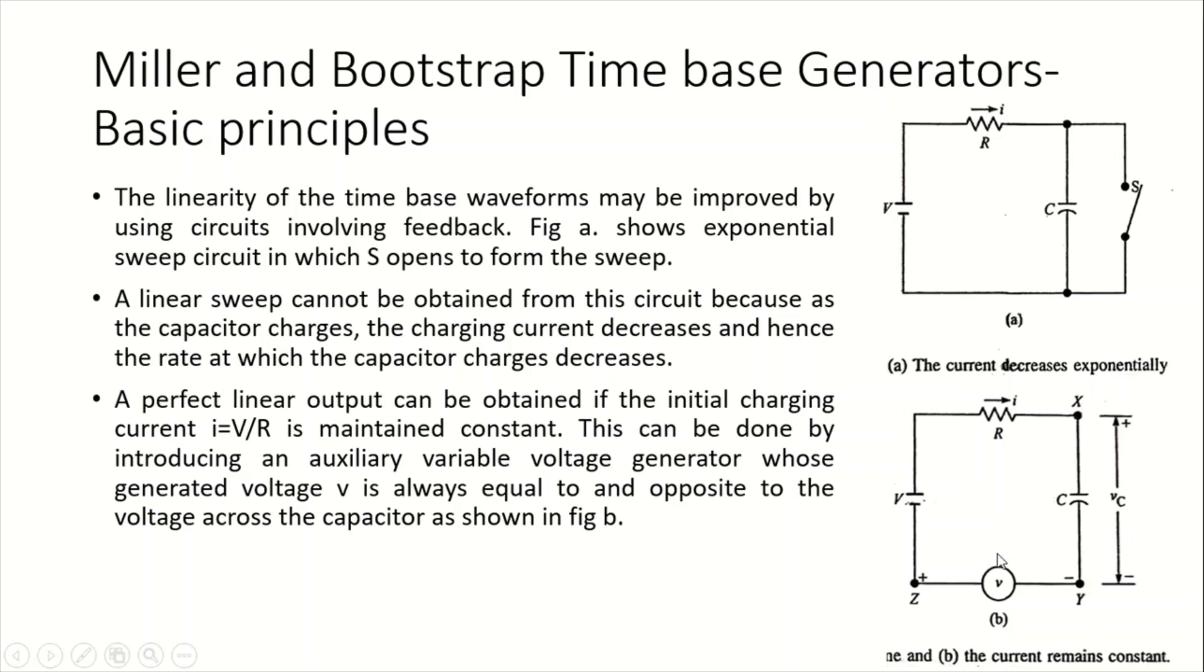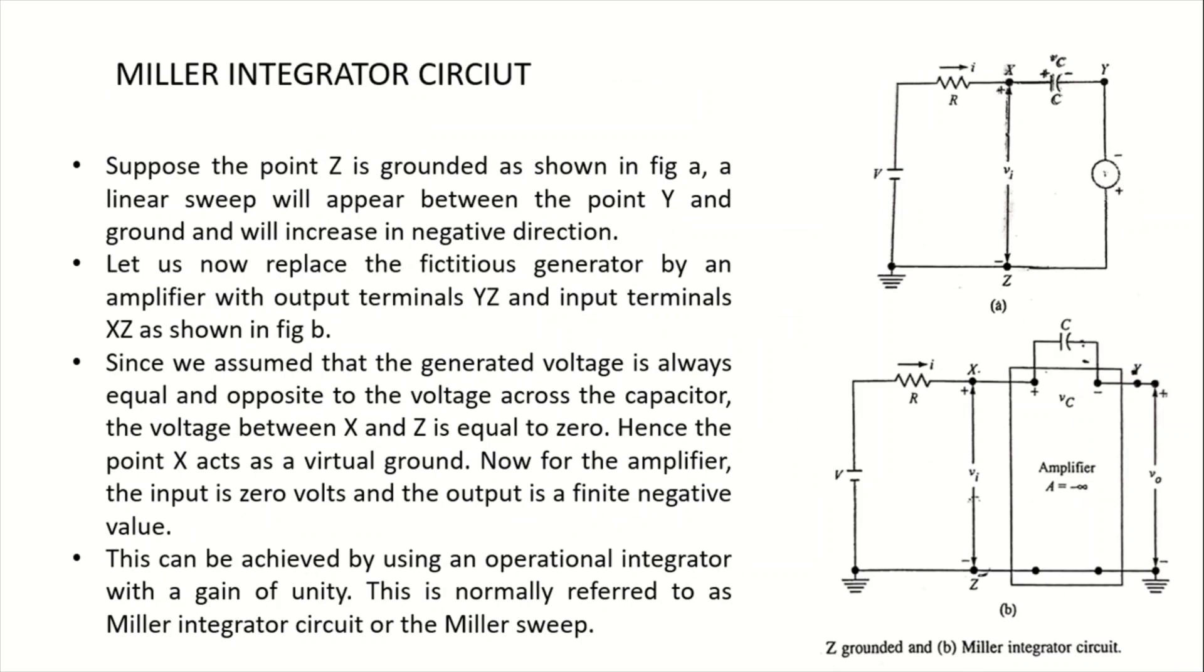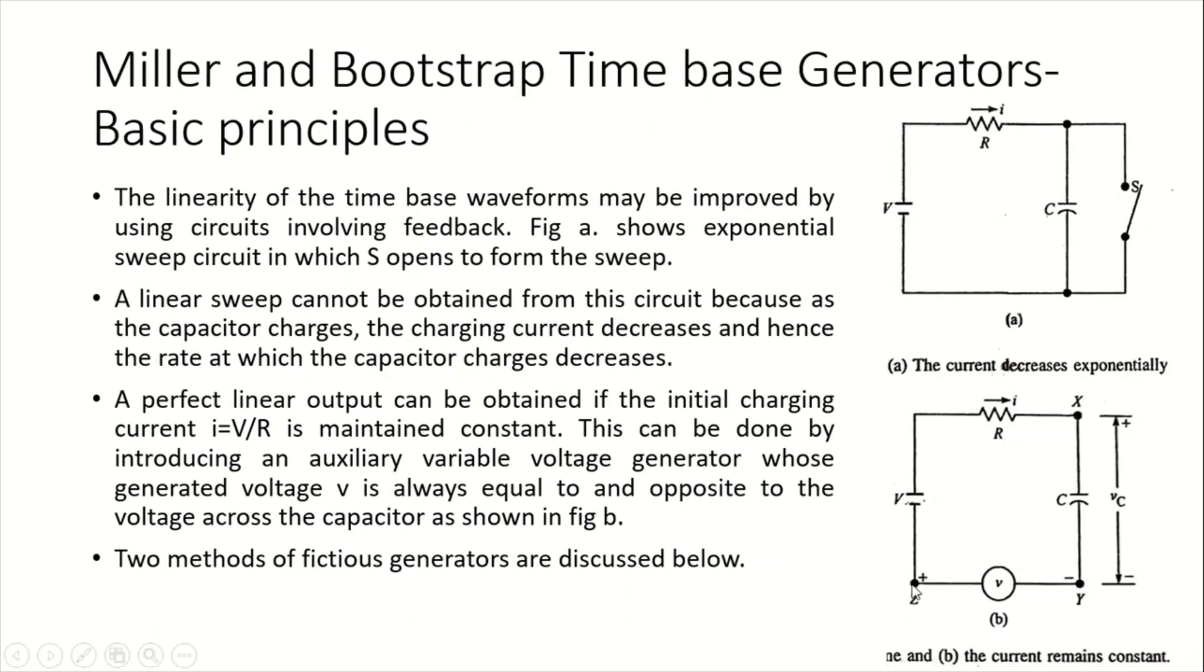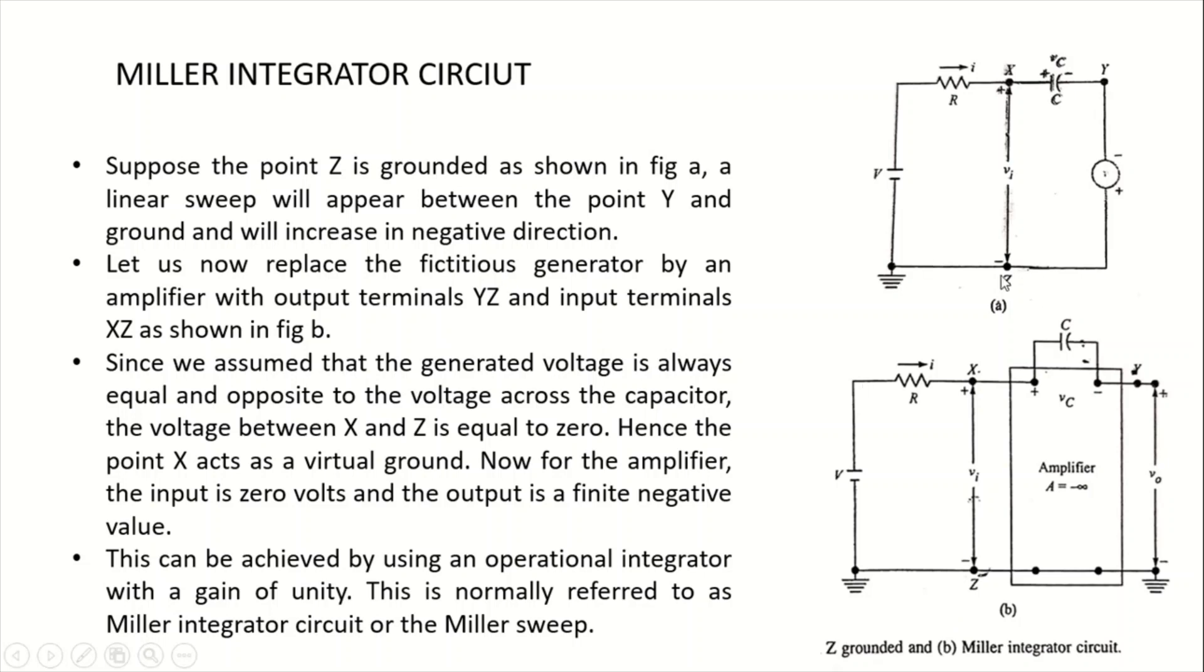There are two methods of generators which can be used here. The first one: if point Z is grounded in this circuit, and another one if point Y is grounded. If point Z is grounded, a linear sweep will appear between point Y and Z in the negative direction.